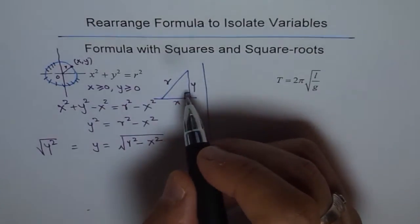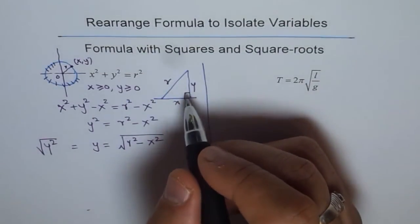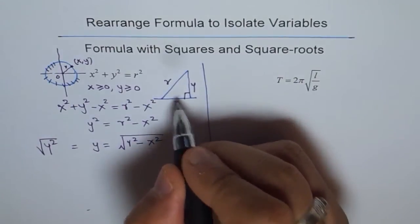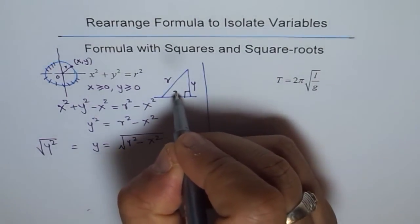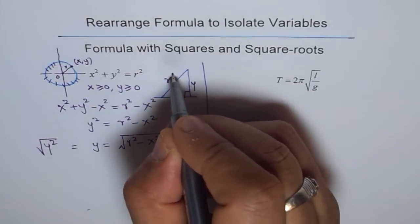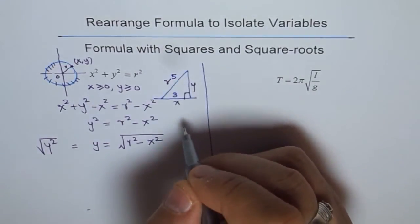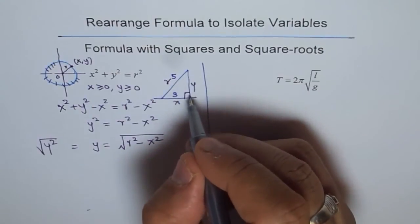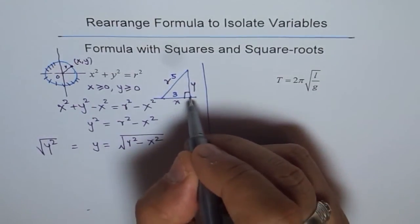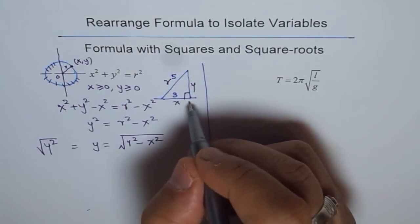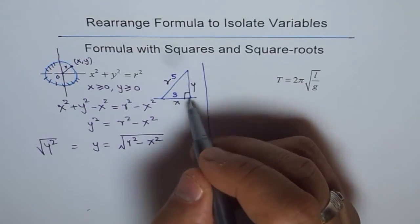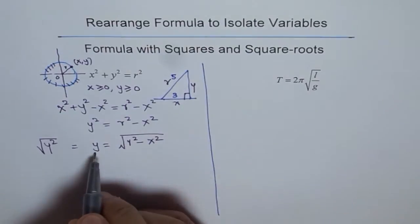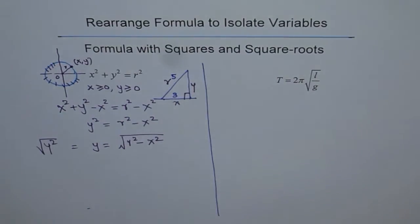Now let us consider that one side of this right-angled triangle is 3 centimeters, and the other one is 5 centimeters. Then what is the height of the triangle? The base is 3, and the hypotenuse is 5. We can use this formula to find the height.